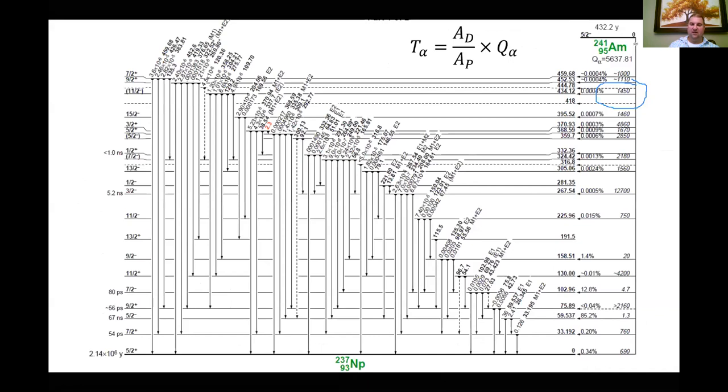On the energy level diagram, you can also look to see which ones are the biggest percentages. The 85.2, the 12.8, this 1.4, these are going to be some of our most intense alpha decay peaks.